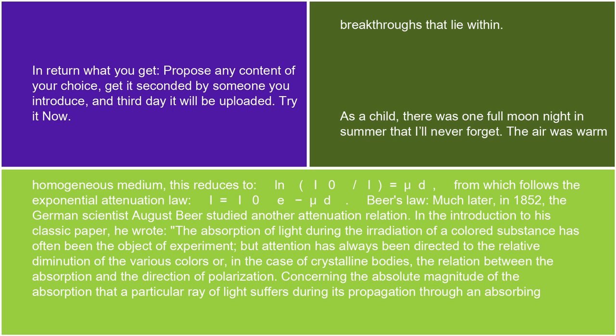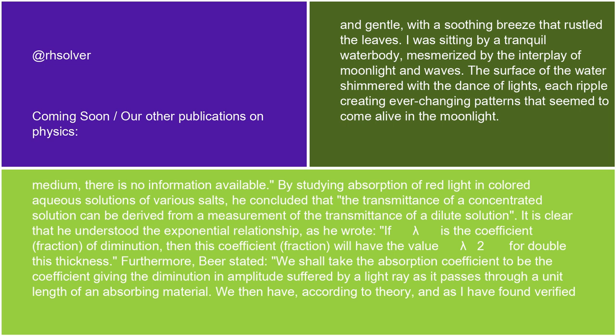Beer's Law. Much later, in 1852, the German scientist August Beer studied another attenuation relation. In the introduction to his classic paper, he wrote: 'The absorption of light during the irradiation of a colored substance has often been the object of experiment, but attention has always been directed to the relative diminution of the various colors, or in the case of crystalline bodies, the relation between the absorption and the direction of polarization. Concerning the absolute magnitude of the absorption that a particular ray of light suffers during its propagation through an absorbing medium, there is no information available.'